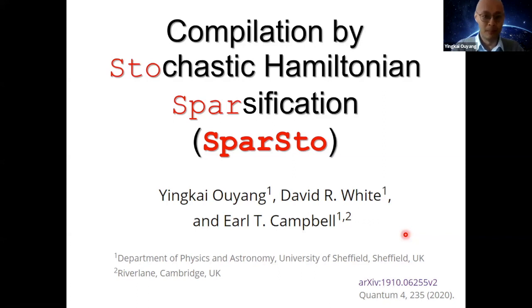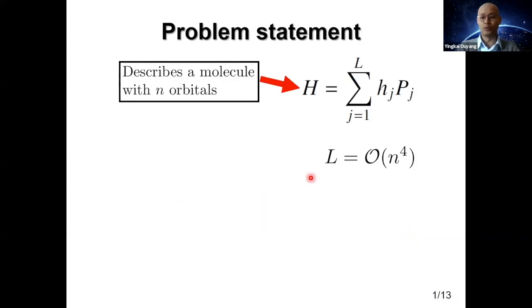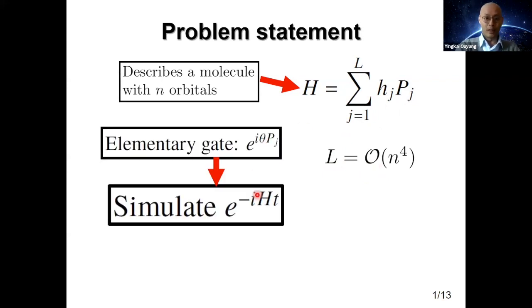This talk is a joint work with David White and Earl Campbell. This problem really is about quantum simulation. Suppose we are interested in simulating a very simple molecule and we can describe it with a Hamiltonian perhaps on several qubits. The problem is that this Hamiltonian, even for a very simple molecule, say ethane or propane, can have a huge number of terms.